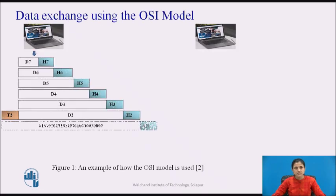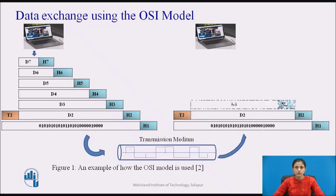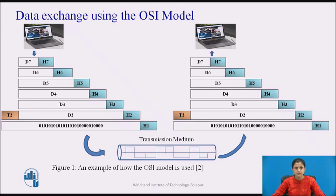The OSI model has 7 layers. Figure 1 gives an overall view of the OSI layers with an example of how data can be transmitted using the OSI model. The sending process has some data it wants to send to the receiving process. It gives the data, say D7, to the application layer, i.e. layer 7, which then attaches the application header and gives the resulting item to the presentation layer. Data unit D6 means the data at layer 6, and so on. The process starts at layer 7 then moves from layer to layer in descending sequential order. At each layer, a header is attached to the data unit.